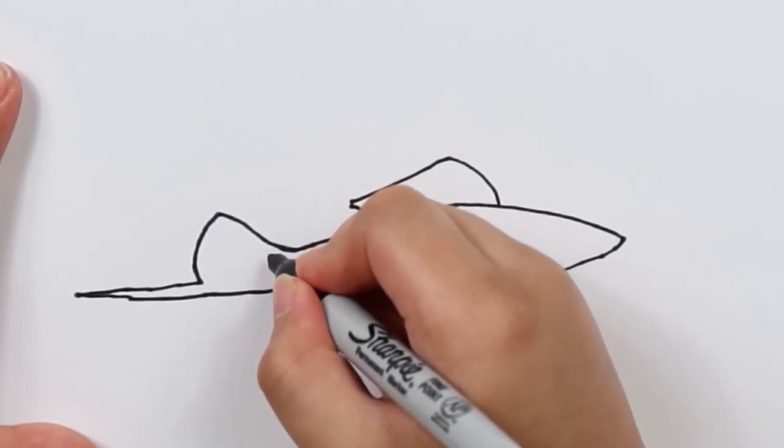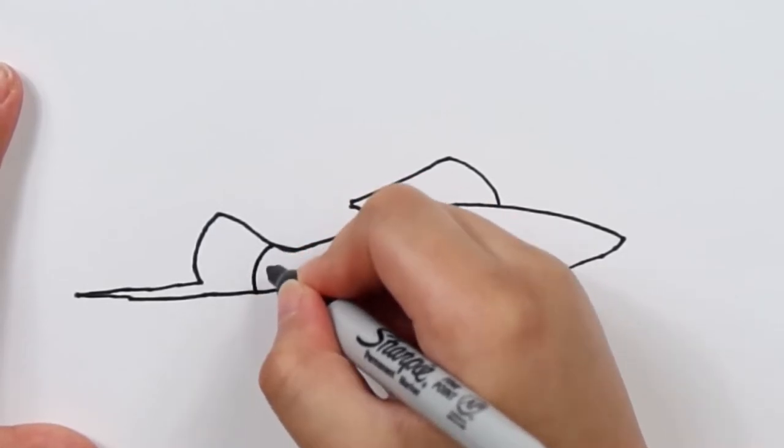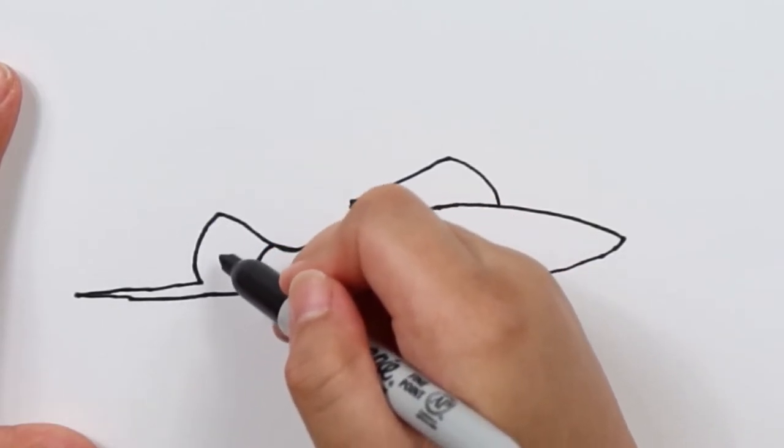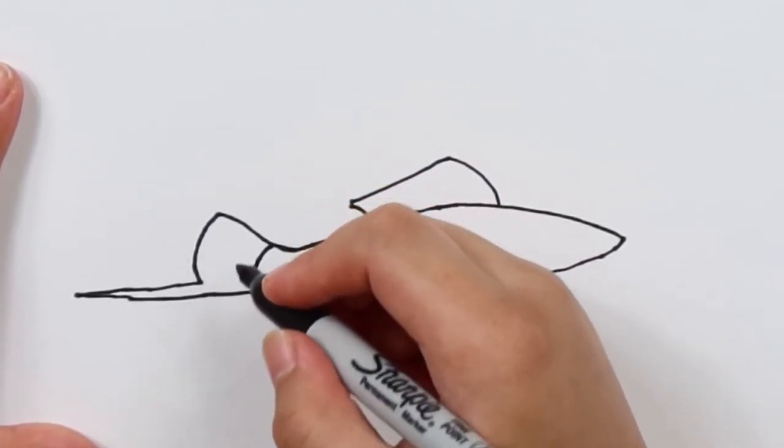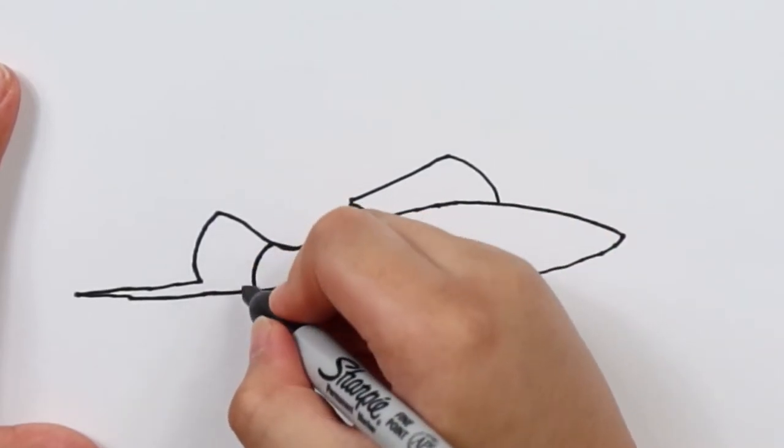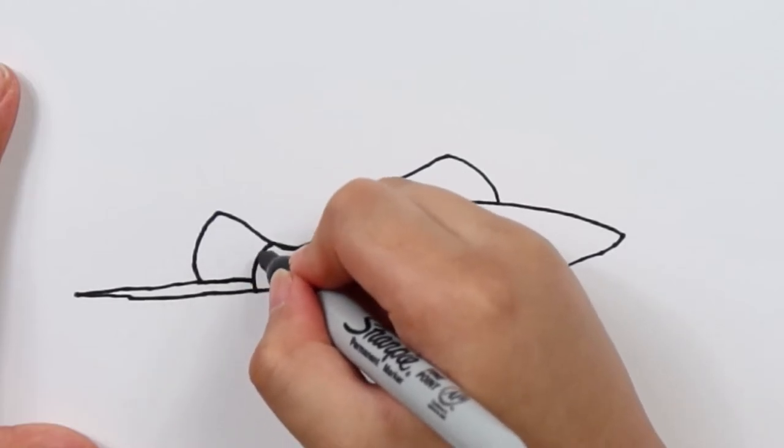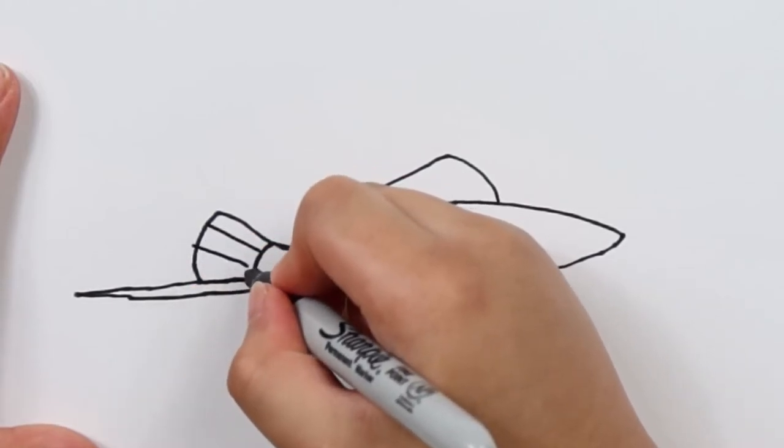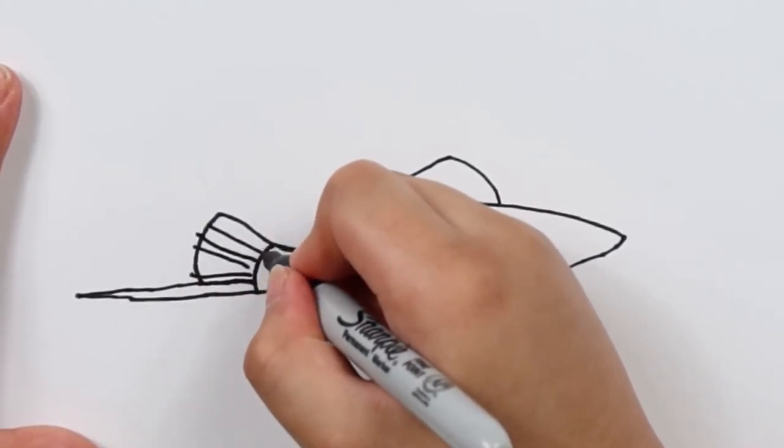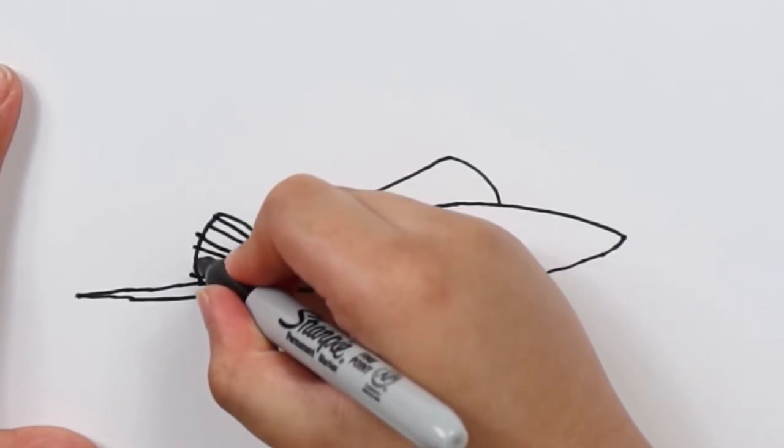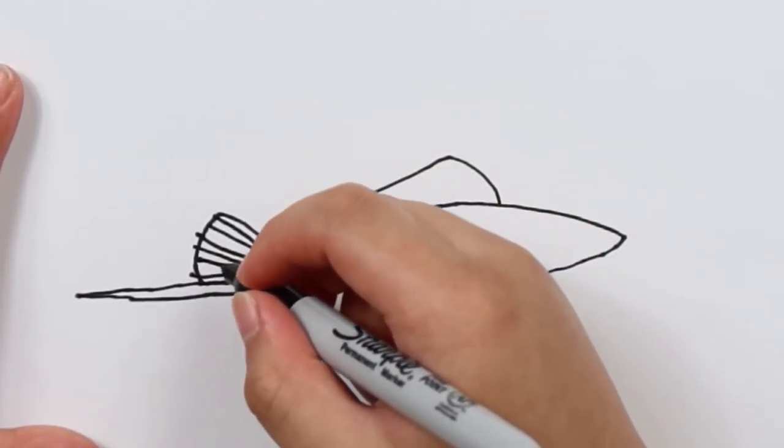You do this because this is the fin part and this is the actual fish. So you have to cover this part because we're going to be drawing like streaks, bones.